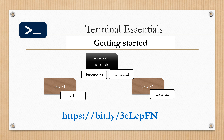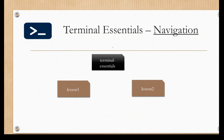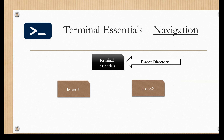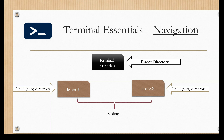Before we start writing any command, let me make some things clear. The directory called Terminal Essentials is referred to as the parent directory, and as a parent it has two child directories — you can call them subdirectories or children. As you can already guess, Lesson One and Lesson Two are siblings.